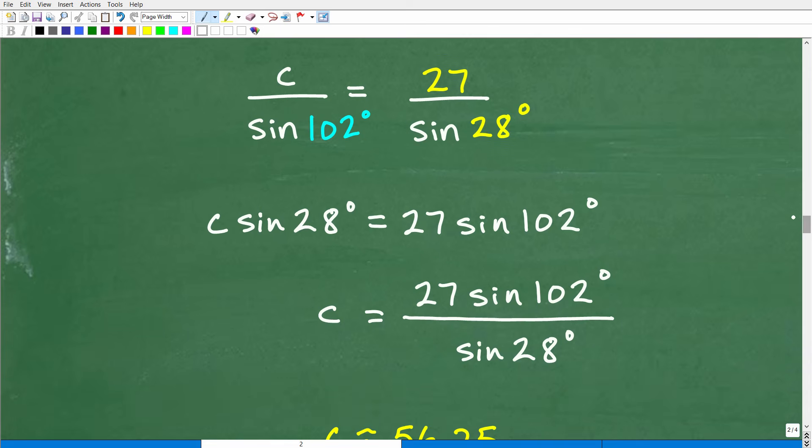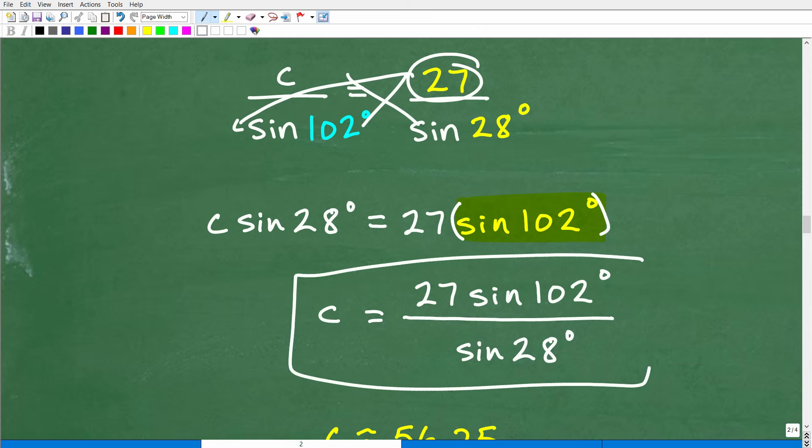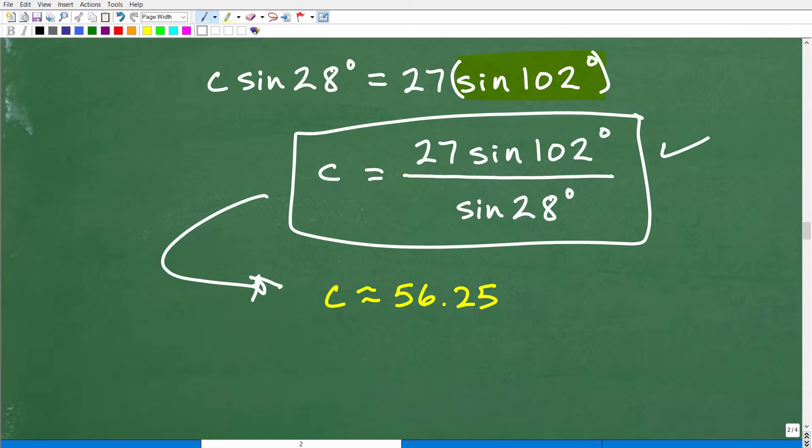So again, don't do any computing until you finish with the algebra. So we're going to go ahead and do the cross product. So c times sine of 28 degrees is equal to 27 times sine of 102. So make sure this 27 is in front of the sine of 102. When you're multiplying, you're not putting the 27 at the end of it. You want to put it at the beginning of it because this right here is something you're going to have to compute in your calculator. Then you'll multiply that by 27. So to solve for c, we're going to take this whole thing and divide it by sine of 28. And you can just follow the simple algebra right here. And then we'll get our calculator out in degree mode. We'll do all this number crunching and you're going to get c is approximately 56.25.